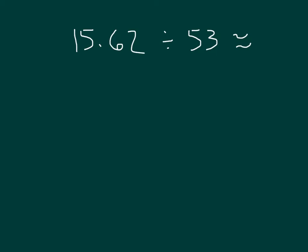Here I'm asked to estimate this quotient. We have 15 and 62 hundredths divided by 53. We'll start by looking at our divisor. And 53 is close to 50. Next we're going to look for multiples of 5 that are close to my quotient here. So we have 5, 10, then 15.